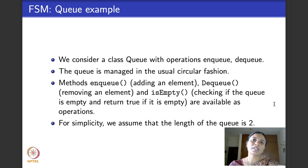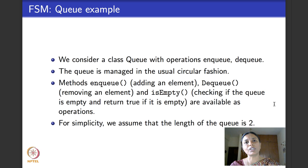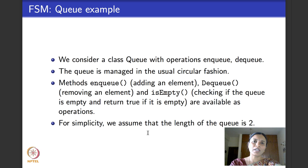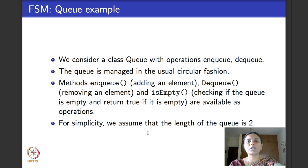In the last lecture, I introduced the queue example and looked at one sequencing constraint. The class queue comes with methods supporting operations: enqueue adds an element, dequeue removes an element, and there are methods to query whether the queue is empty or full. A simple sequencing constraint like 'dequeue should have been preceded by an enqueue' can be described and tested, but more complex constraints — like 'the number of enqueues at any point must be greater than or equal to the number of dequeues' — need finite state machines. For illustration, I've assumed a queue of length 2.